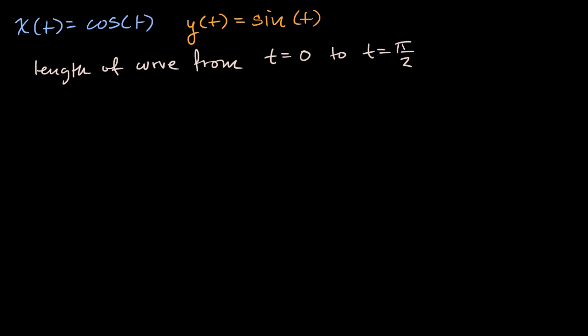So the formula tells us that arc length of a parametric curve is equal to the integral from our starting point of our parameter, t equals a, to our ending point of our parameter, t equals b, of the square root of the derivative of x with respect to t, squared, plus the derivative of y with respect to t, squared, dt.